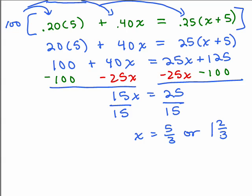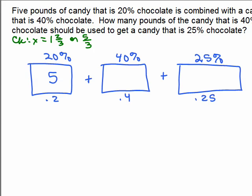In both cases we got x as 1 and 2/3. Now we want to go back to the original problem and check. We got x equals 1 and 2/3, or 5/3, and remember where we put x, it was how much of the 40%. So I'm going to write 5/3 in here. If we add 5 plus 5/3, or 5 plus 1 and 2/3, that's 6 and 2/3, or 20/3. If you change to a common denominator, 15/3 plus 5/3, it's the same thing.